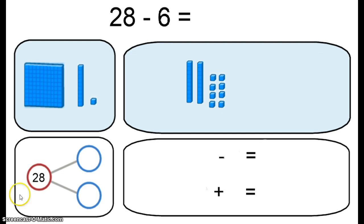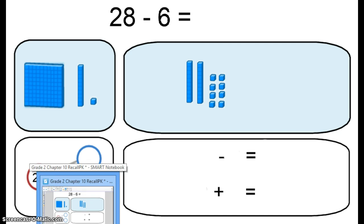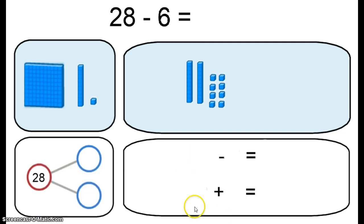All right, so let's take a look at how we would solve this problem, 28 minus 6, using this subtract the ones strategy. Pause it here if you want to take a look, and especially, can you figure out what goes in these blanks? Something minus something equals something, something plus something equals something.